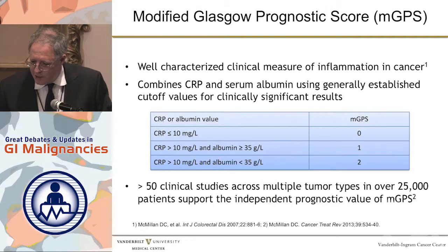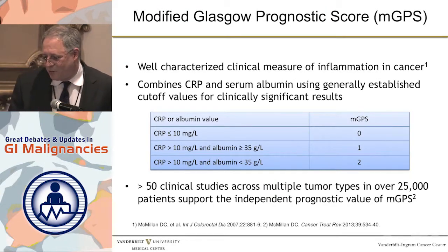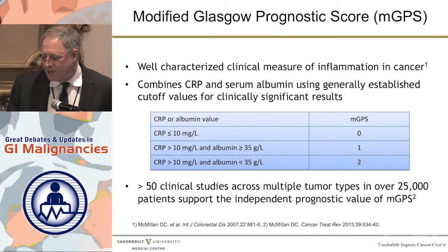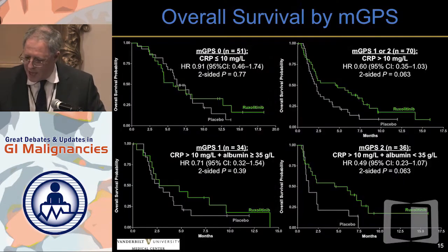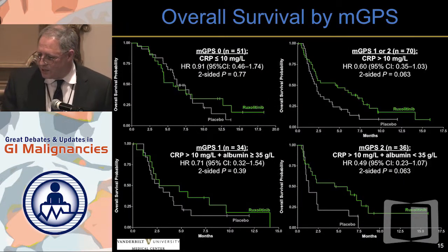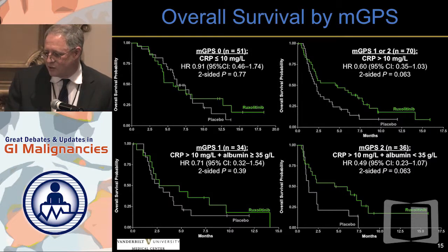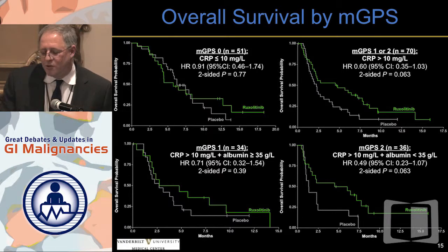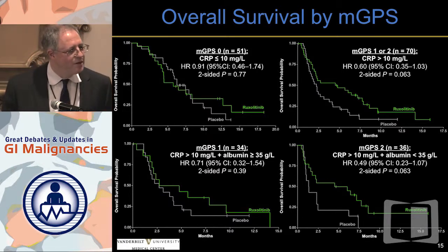I'll go on to the modified Glasgow Prognostic Score, which is what they used on this. The modified Glasgow Prognostic Score is an attempt to look at inflammation and illness. It uses C-reactive protein and albumin in combination. The patients with the highest scores — Glasgow Prognostic Score of 2 — again a small subset, total of 36 patients — the ruxolitinib looked like it did a lot better. So you're encouraged that maybe there is something to this: the inflammatory sick patient may benefit more from ruxolitinib than others.